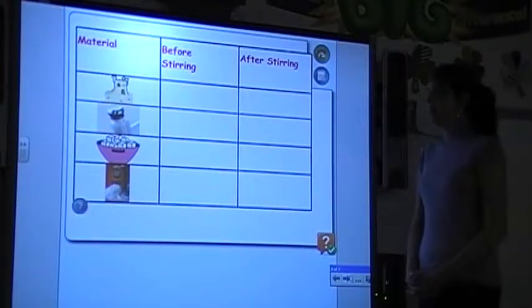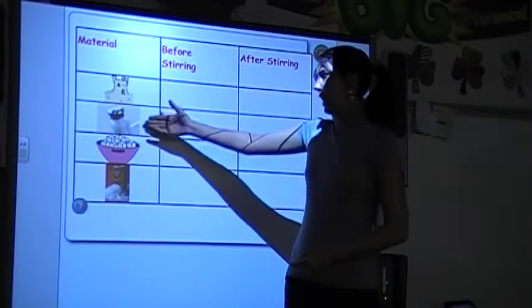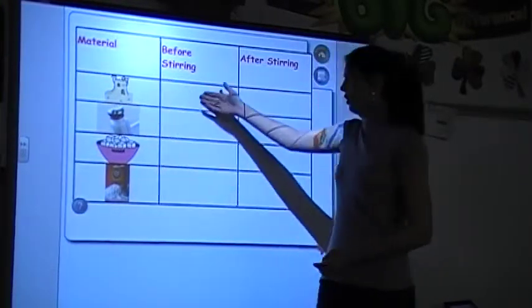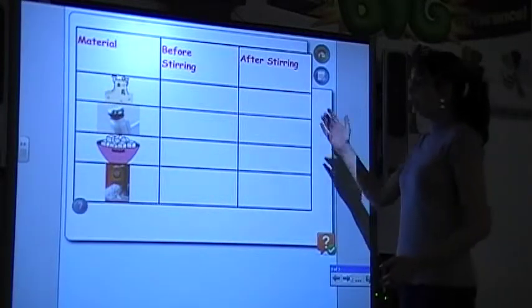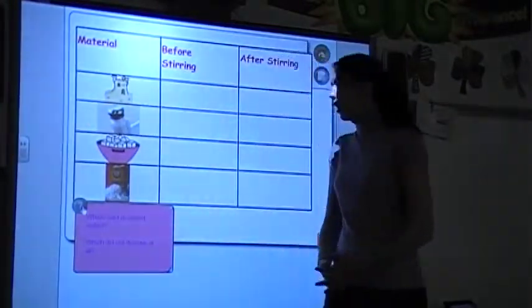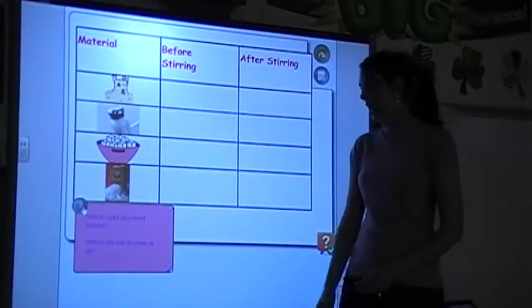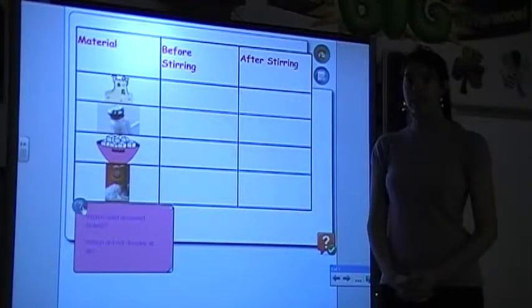At the student's desk, they'll have this exact graphic organizer with the sand, salt, sugar, and baking soda. They'll need to record what happens before stirring and then after stirring what happens. By clicking the question mark, there's additional questions at the end. Which solid dissolved the fastest? Which one did not dissolve at all?